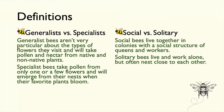Most native bees are solitary — they live alone, work alone, with no social structure, no queen. Bumblebees are social bees; they live together but don't make honey or have a full worker hierarchy. Solitary bees tend to have one generation per year — they come out in spring, a new queen hibernates for next year, and all the others die.